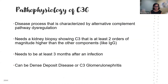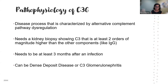So what is C3G? It's a disease process characterized by alternative complement pathway dysregulation. It requires a kidney biopsy showing that C3 is at least two orders of magnitude higher than other components, like IgG. It's important to note it doesn't need to be isolated C3 — it just has to be two orders of magnitude higher than the surrounding components, like immunoglobulins.